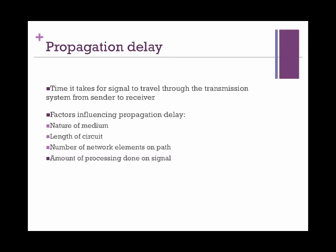There are many things that determine propagation delay, starting with the nature of the medium. For example, fiber optic is a fast medium and has less propagation delay when compared to copper wires — light travels faster than electricity. Length of the circuit is another factor. If the signal needs to travel half the distance to the moon and back to complete the circuit, as in a satellite signal, it is no surprise that there is about a minute of delay.